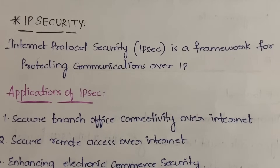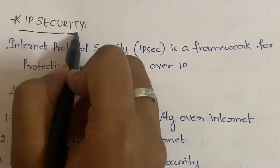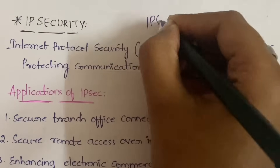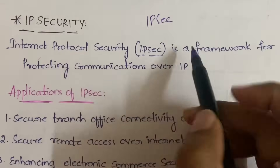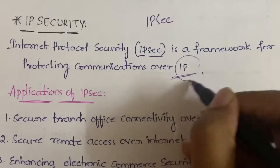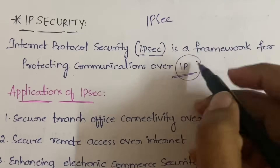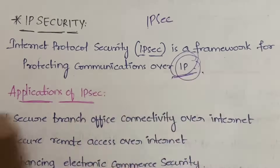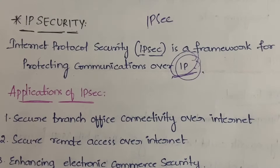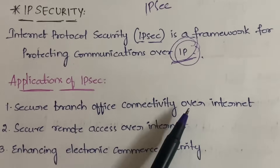IP security is nothing but Internet Protocol Security, in short also called as IPsec. It is a framework for protecting communications over IP. Using the internet protocol you will be doing communications — it could be email or any simple text or anything. In order to protect those communications and establish security for them, we will be using IP security.